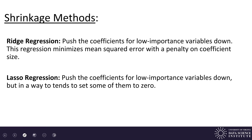We'll look at the formulas in a moment. In LASSO regression, it will tend to push some of the coefficients all the way down to zero. In ridge regression, the coefficients don't generally get to zero — they just go down. In LASSO, they tend to arrive at zero.